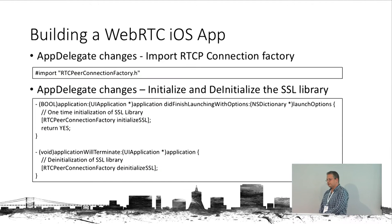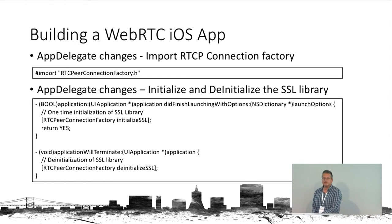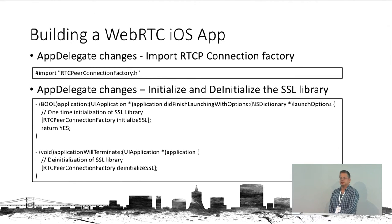These are the key ingredients in the application. In our AppDelegate, we will have to initialize the SSL library that comes with WebRTC and de-initialize it. The SSL library is used in order to be able to talk to our server in a secure way. On initialization we call initialize SSL, and upon termination, de-initialize SSL.